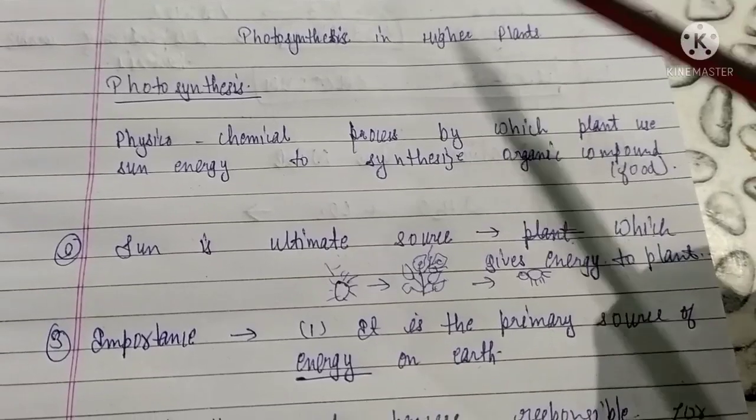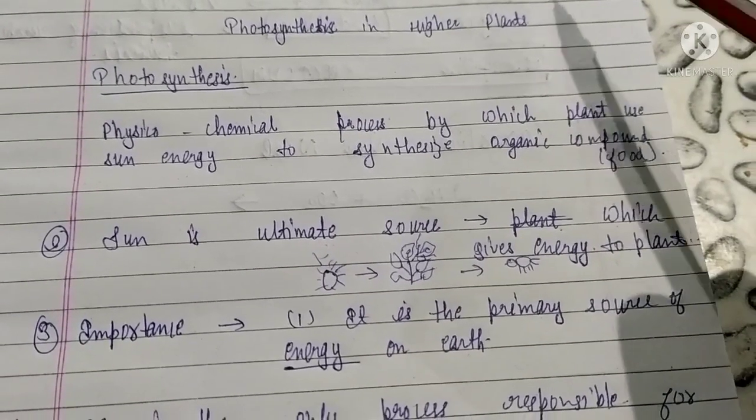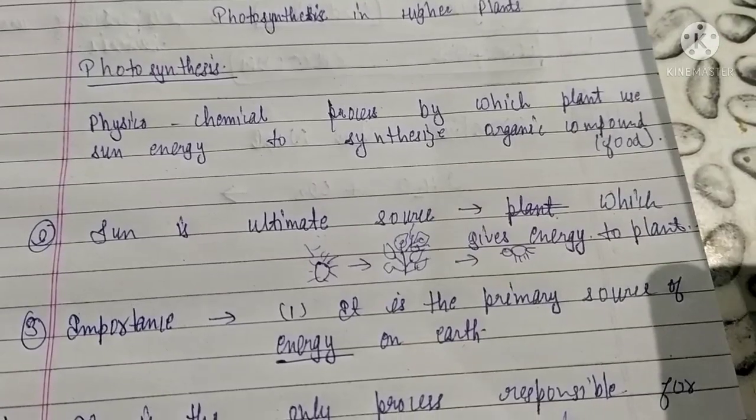Photosynthesis is basically the physico-chemical process by which plants use sun energy to synthesize organic compounds, that is food. It is a physical-chemical process which gives energy to the plant.